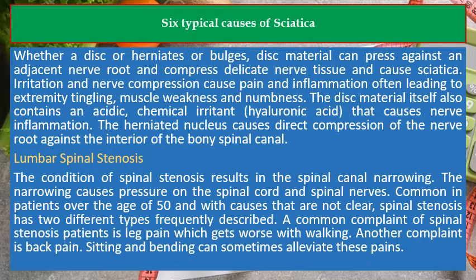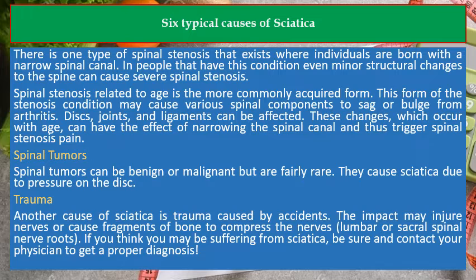The disc material also contains an acidic chemical irritant, hyaluronic acid, that causes nerve inflammation. The herniated nucleus causes direct compression of the nerve root against the anterior of the bony spinal canal. Lumbar spinal stenosis results in the narrowing of the spinal canal, causing pressure on the spinal cord and spinal nerves. Common in patients over the age of 50, spinal stenosis has two different types. A common complaint is leg pain which gets worse with walking, along with back pain; sitting and bending can sometimes alleviate these pains.